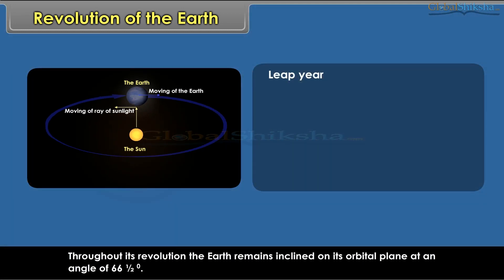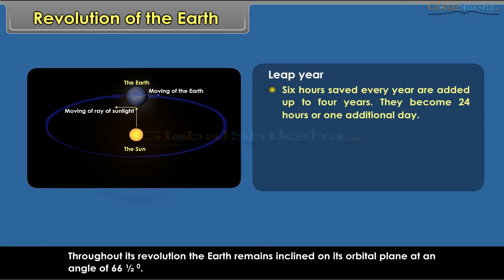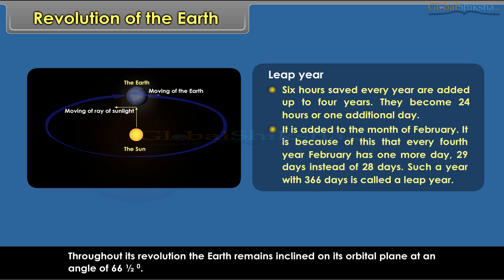The six hours saved every year are added up over four years; they become 24 hours, or one additional day. This day is added to the month of February. It is because of this that every fourth year, February has one more day — 29 days instead of 28 days. Such a year with 366 days is called a leap year.